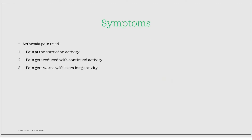The pain triad is the most important symptom to know. When a patient presents with these symptoms, arthrosis or arthritis has to be suspected. The triad consists of: first, at the start of a movement such as walking there is quite a lot of pain; with continued activity the pain gets reduced; but with extra long activity the pain gets worse again.